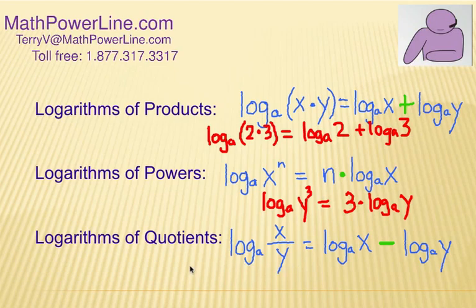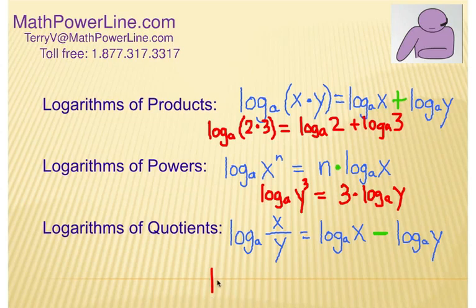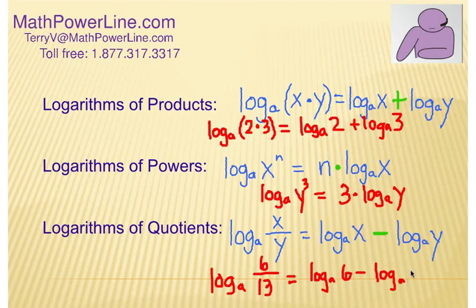And the last property here is the logarithm of a quotient. You have log base A of 2 numbers being divided. So let's say that we have log base A of 6 over 13. If we expand that out using this property, it would be log base A of 6 minus log base A of the 13. Division becomes subtraction, multiplication becomes addition, and a power becomes multiplication in the front.